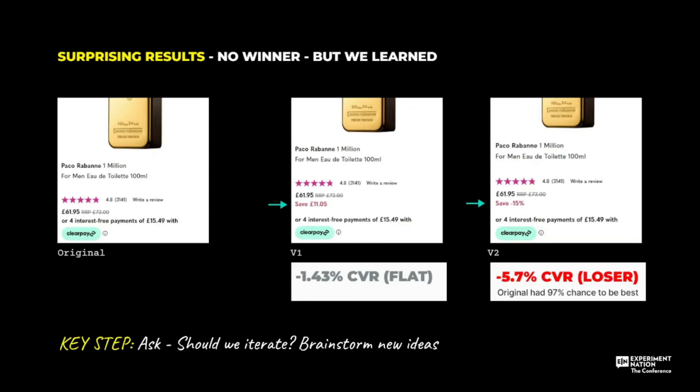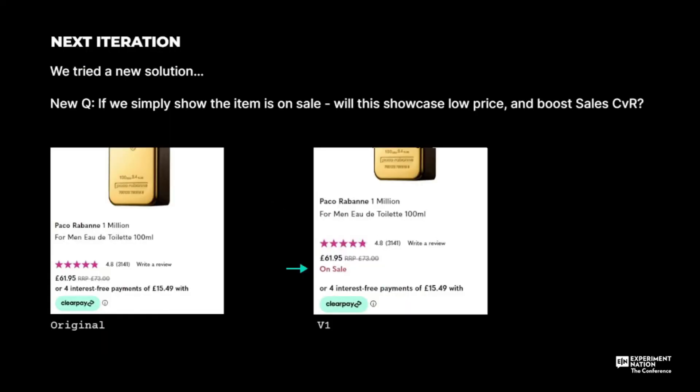It's a bit obscure — we would expect them to resonate. There could be different theories as to why: perhaps because they pushed content down lower, or perhaps the savings and discount amount is actually a bit low and doesn't really wow the audience. But the important thing is we don't stop and move on to the next prioritised test idea. We actually pause and think: can we do anything else, should we iterate, can we brainstorm a different idea? And then we move on to a new iteration, a new solution.